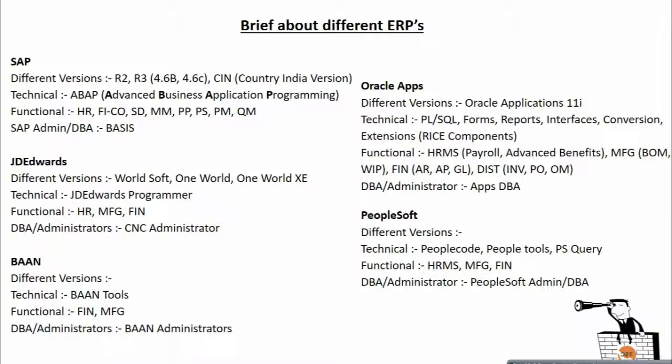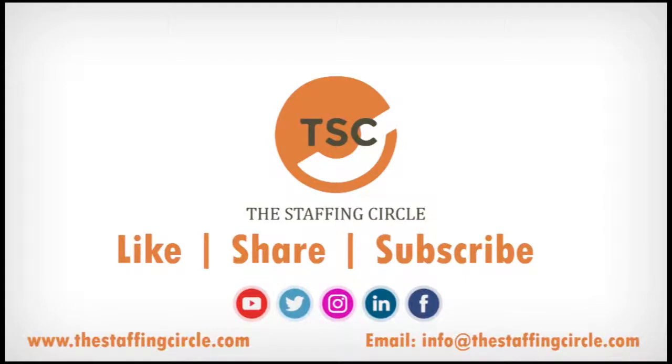Let's briefly understand different ERPs and their modules. For SAP, there are different versions like R2, R3, and country-specific versions. SAP technical modules include ABAP — Advanced Business Application Programming. Functional modules in SAP include HR, Finance, Controlling, SD, Materials Management, Procurement, PS, PM, and QM. On the administration side, there is SAP Basis. For Oracle Applications, version 11i includes on the technical side: PL/SQL, Forms, Reports, Interfaces, Conversions, and Extensions. On the functional side of Oracle Apps, there is Human Resource Management System, Manufacturing, Finance, Inventory, Purchase, and Order Management.